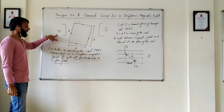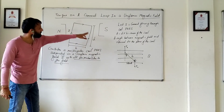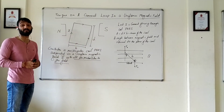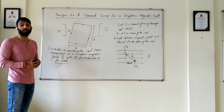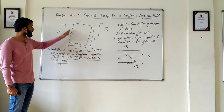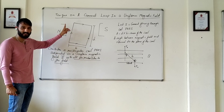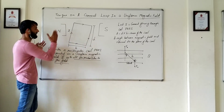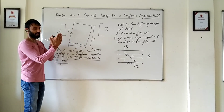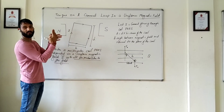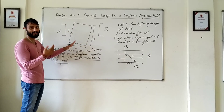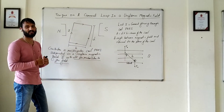The magnetic field will obviously be from north to south, and this is how the current is going. Let us first apply Fleming's left-hand rule in order to know the directions of the force. As you can see, the current is going in the upper direction. Also note that this loop is kept perpendicular to the magnetic field — that is, three-dimensional — so I have made it tilted to show that three-dimensional loop.